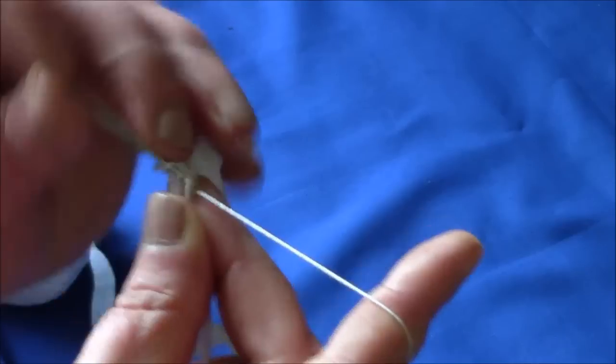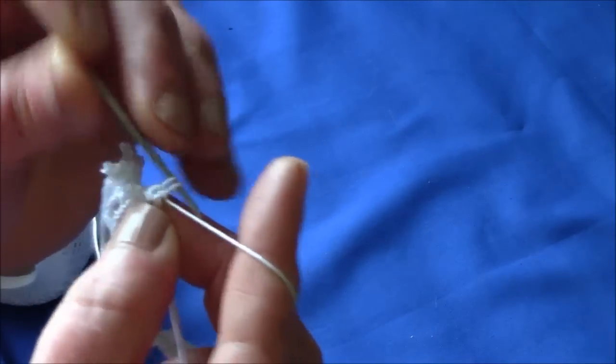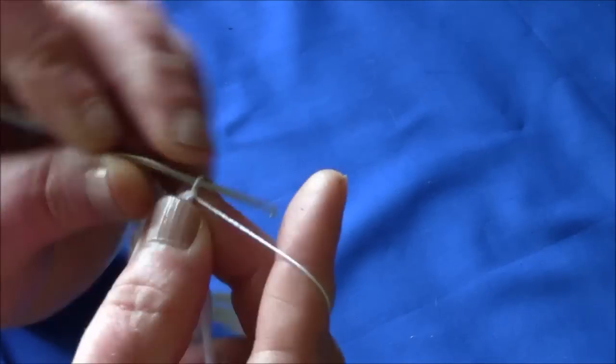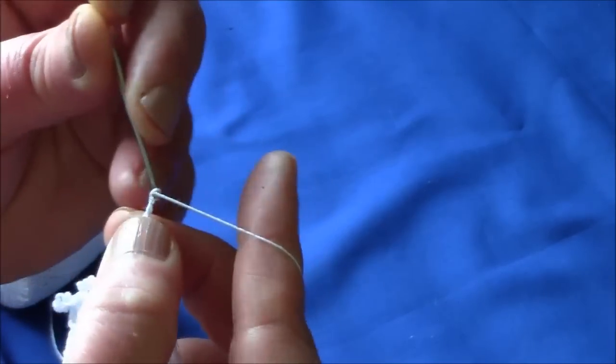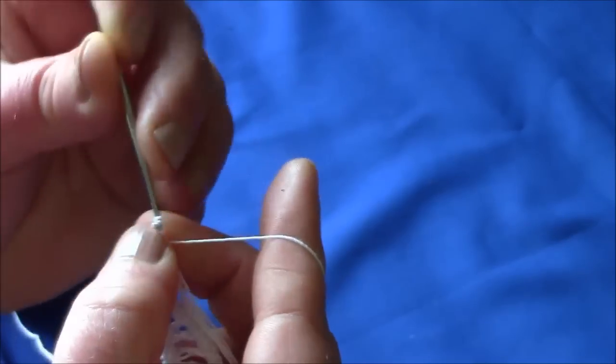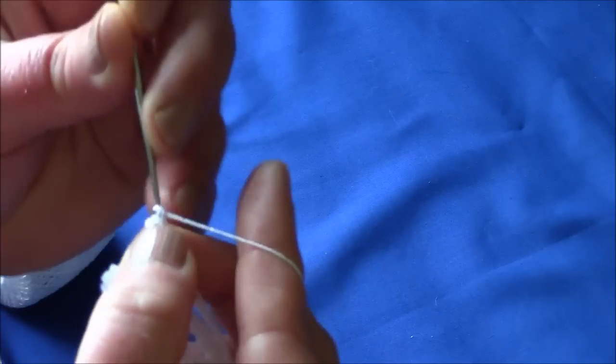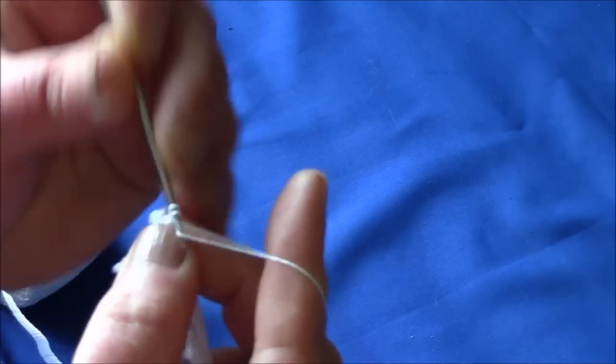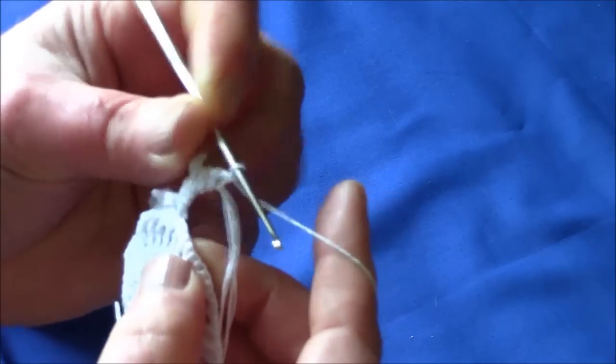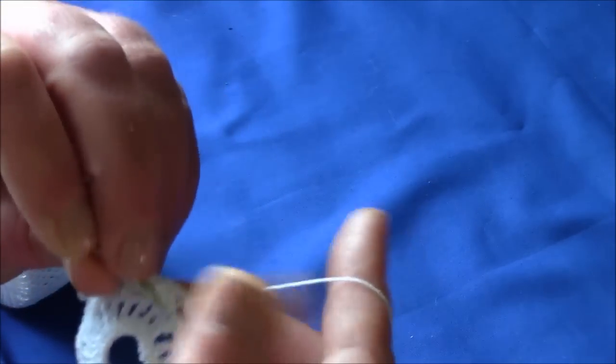Another double crochet, one, two, three. Chain five, one, two, three, four, five. One, two, three, four on the previous row, one, two, three, four, single crochet into the fifth.